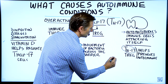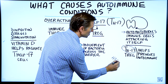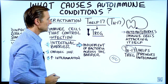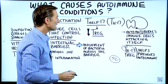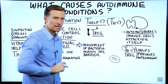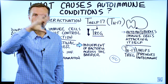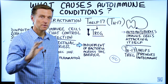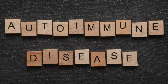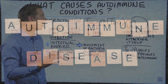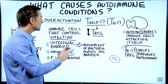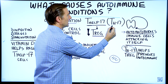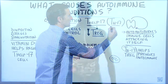When someone's infected with the HIV virus, what that virus does is it targets the T helper cells and knocks those out, so you have no more immune system at all. In an autoimmune condition, you have an overactivation of these Th17 cells.